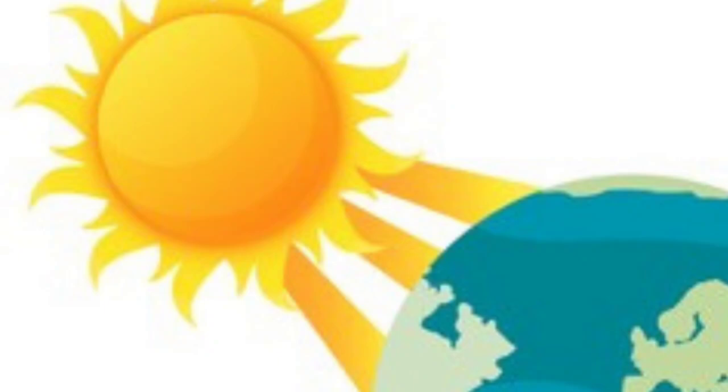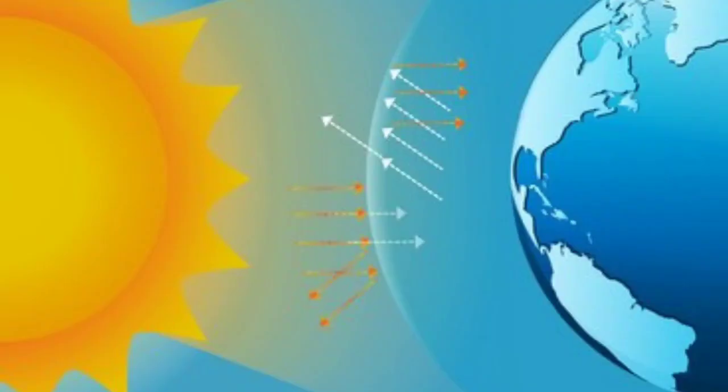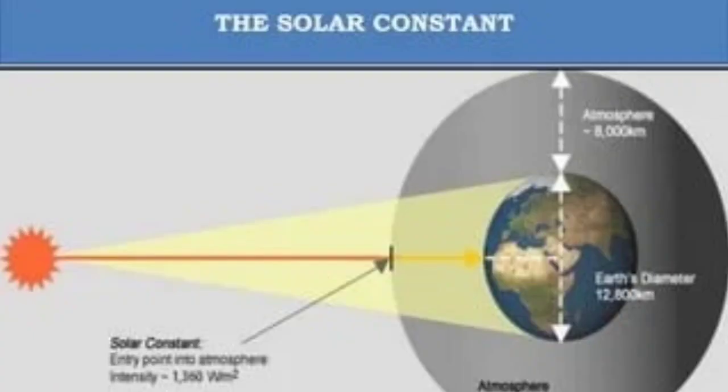The amount of heat received by the different parts of the earth is not the same everywhere. This variation causes pressure difference in the atmosphere, which is the cause of movement of air in the atmosphere. The horizontal movement of air is called wind, and the vertical movement of air is called air current.